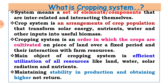Cropping system is an order in which the crops are cultivated. Cropping system means cultivating different crops in order in different seasons like Kharif, Rabi, and summer. You have to cultivate different crops in order according to the season. Cropping system is an order in which the crops are cultivated on a piece of land over a fixed period and their interaction with farm resources.